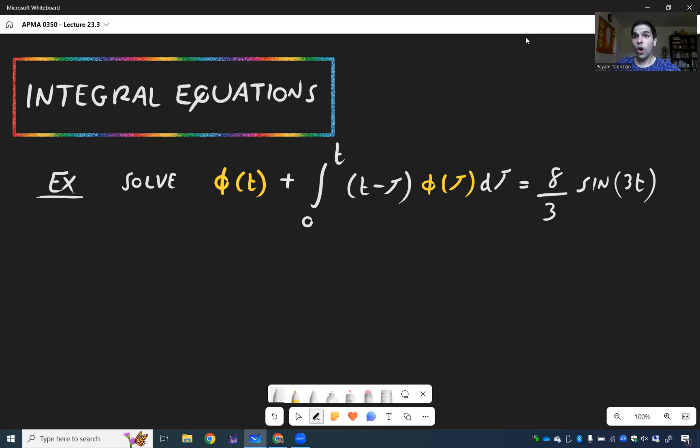And it's called an integral equation because the unknown φ(t) is both in the equation and under the integral.